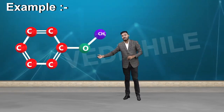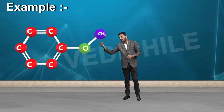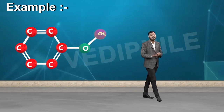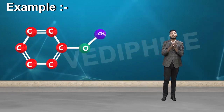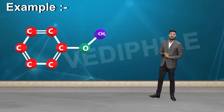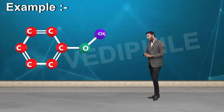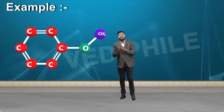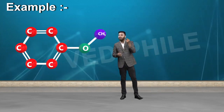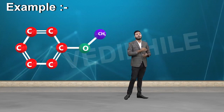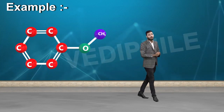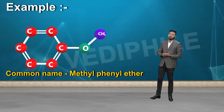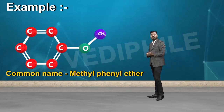यहाँ एक aryl part लगा हुआ है, oxygen, फिर CH3 लगा हुआ है। Common name में: एक को methyl बोलते हैं, एक को phenyl बोलते हैं। M पहले आता है alphabetical order में, तो इसका common name होगा methyl phenyl ether।